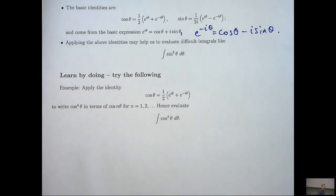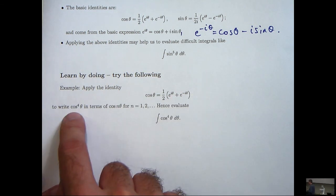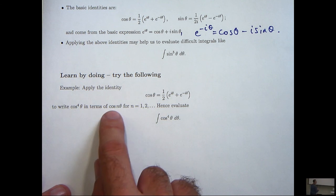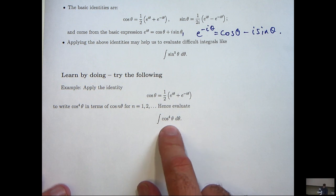Now, one thing that's important to learn is that you don't get good at mathematics just by watching. You need to do some mathematics as well. And here, I've given you an example. Apply this identity to write cos theta to the power of 4 in terms of cos n theta for n equals 1, 2, etc. And hence, evaluate this integral.